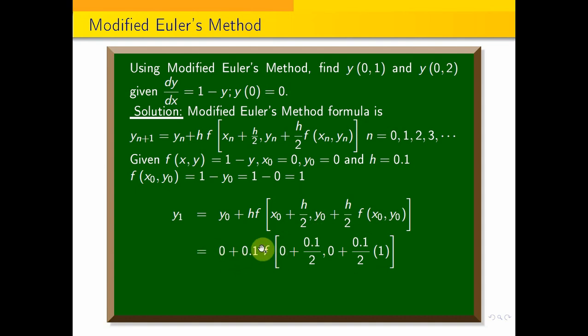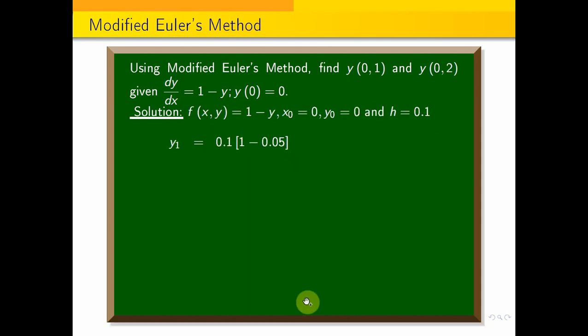Now, if we have 0.1 plus 0.1 plus h by 2, that value is 1. Direct 0.1 times f of simplify is 0.05. Now, the value is f of this, f of x, y, x to 0.05, y to 0.05. The value is 0.095. This equals 0.095. Therefore, y of 0.1 value is 0.0950.